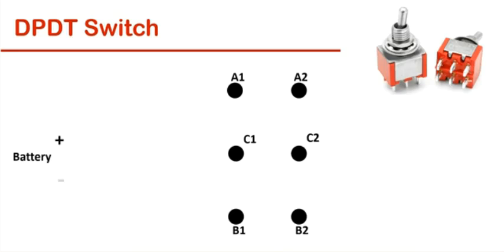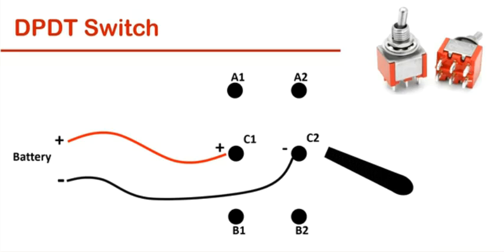If we take a battery and connect the positive and negative terminals to its middle pins, then both the middle pins will get positive and negative polarity. Now, if we push its lever downward, then its common pins will connect internally to A1 and A2. A1 and A2 pins will get positive and negative polarity.